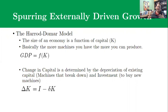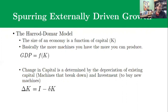It wouldn't be an exact number, but we'd see a relationship: more machines, more output. So if we're thinking about the economy as a function of machines, and you want to produce more, you need to increase your capital. The symbol delta (Δ) is a Greek capital letter D, which is used to mean change.